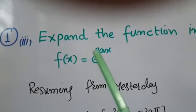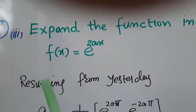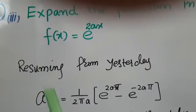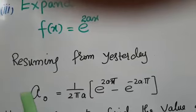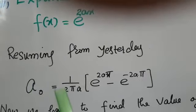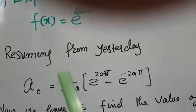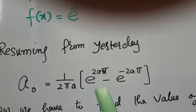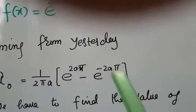F of x equals e to the 2ax. Resuming from yesterday, we solved for a₀ and got 1 over 2πa into e to the 2aπ minus e to the minus 2aπ.